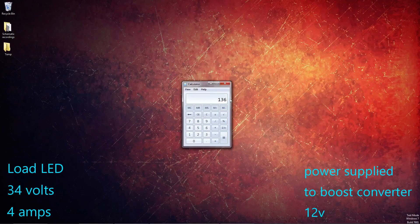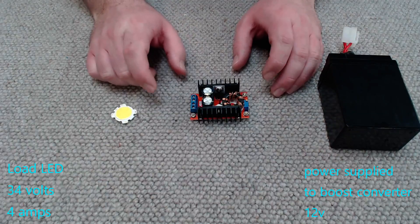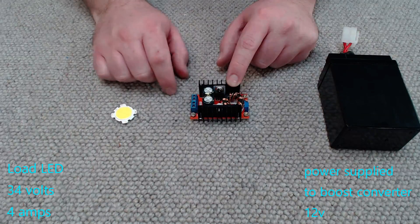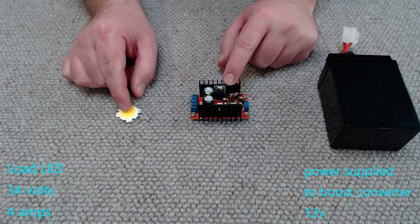Now for the sake of simplicity we're going to assume our boost converter is 100% efficient. Obviously in reality it's not. It's probably going to be between 90 and 95% if it's well designed. However let's just assume it's 100% efficient for argument's sake. So our LED is going to draw 136 watts of power. Now we need to divide this number by the voltage our power supply feeding the boost converter is. Now in this case it's a 12 volt battery. So we're going to divide 136 by 12 and hit equals. And we get 11.3.